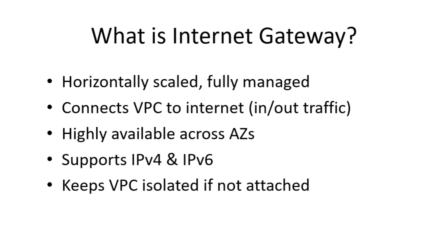The Internet Gateway's primary role is to connect your VPC to the Internet, enabling both inbound traffic — like users accessing your web server — and outbound traffic, like your EC2 instance downloading updates. It is also highly available across multiple availability zones, so you don't have to configure failover or redundancy yourself. An IGW supports both IPv4 and IPv6 traffic, ensuring modern compatibility. And importantly, if you don't attach an Internet Gateway, your VPC stays completely isolated from the Internet, no matter how many public IPs you assign.